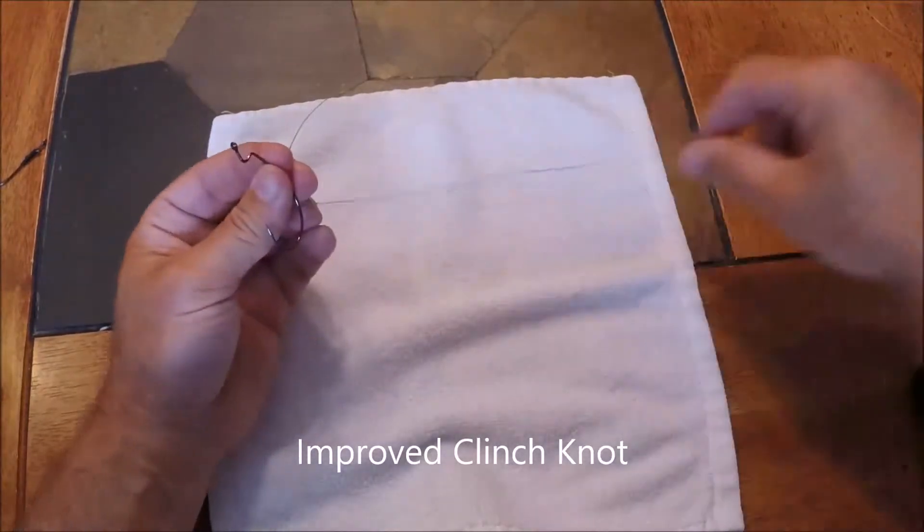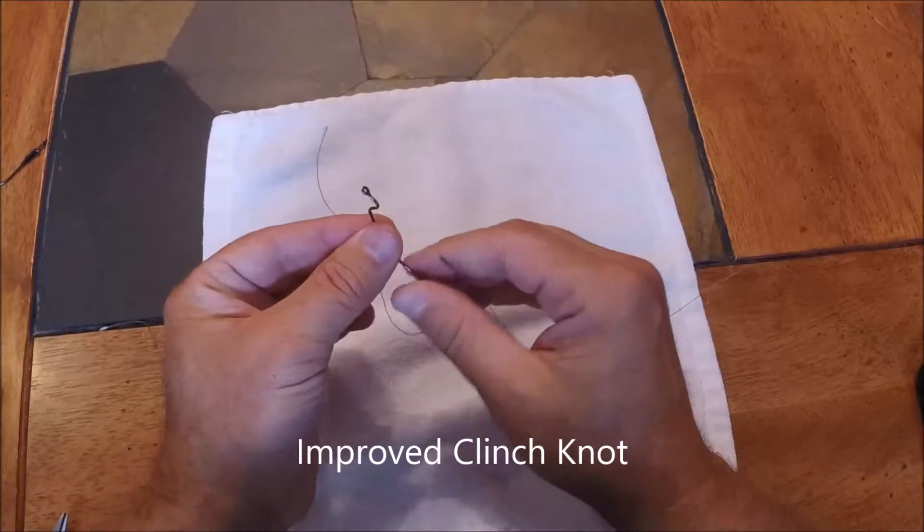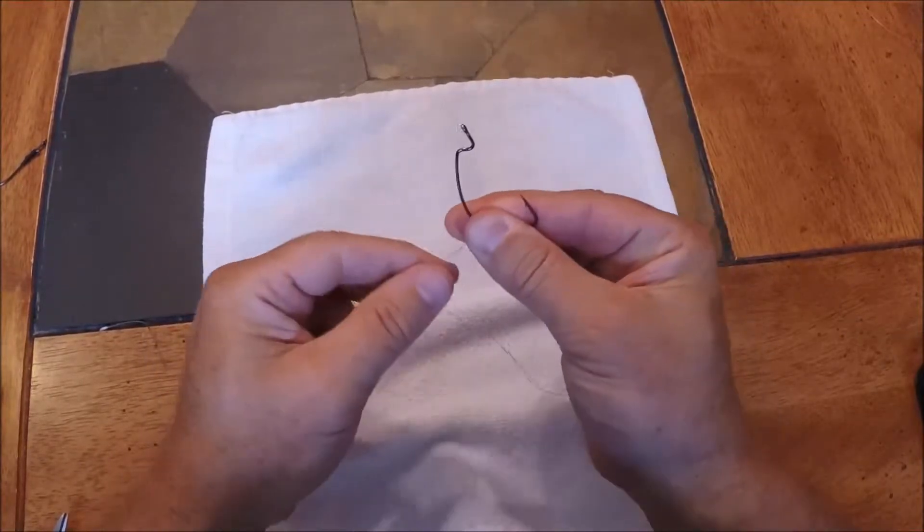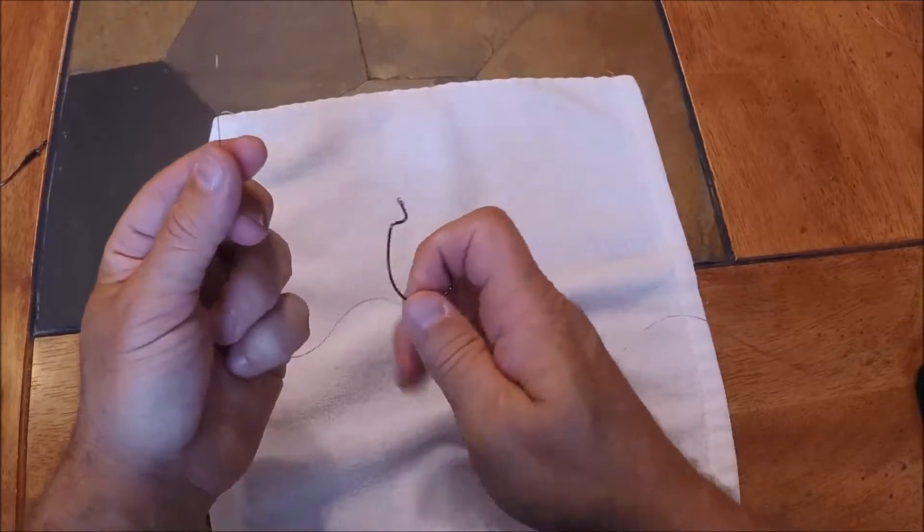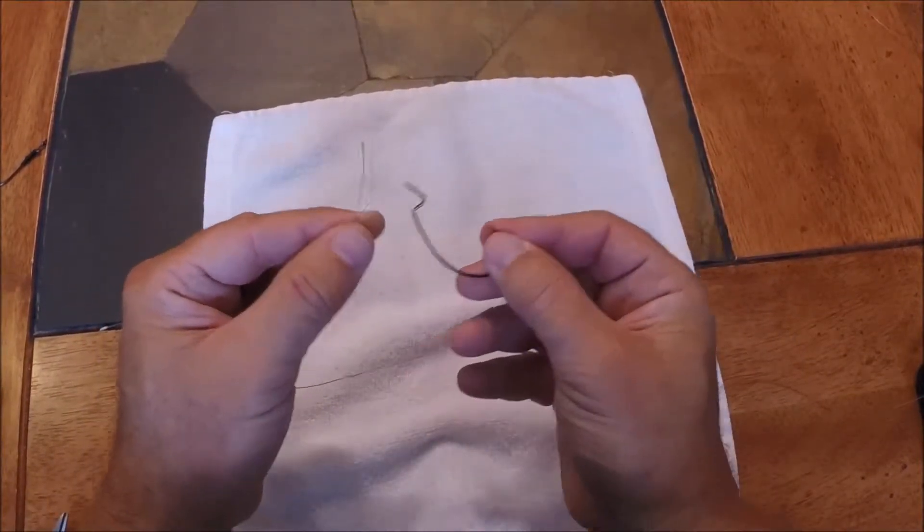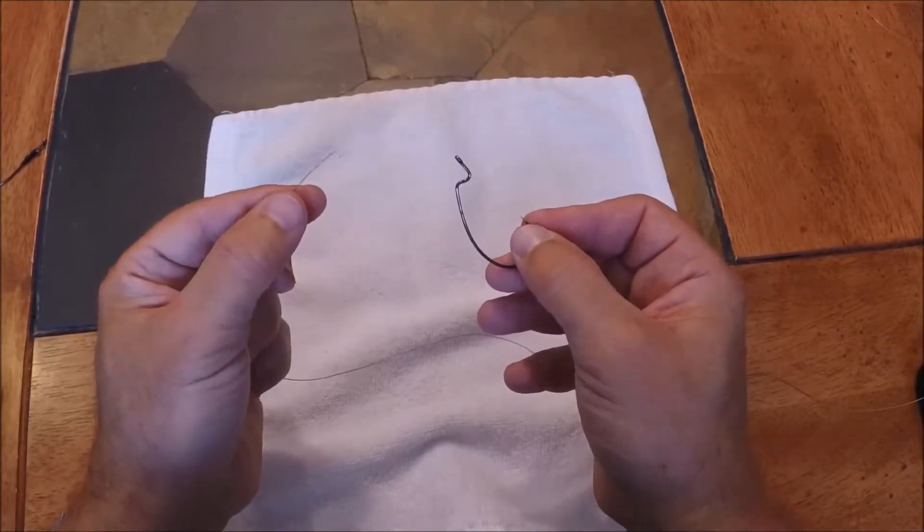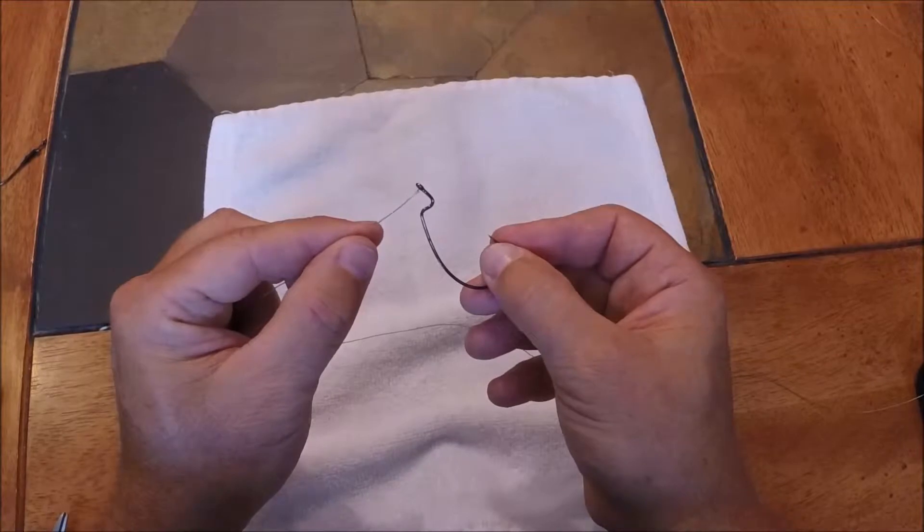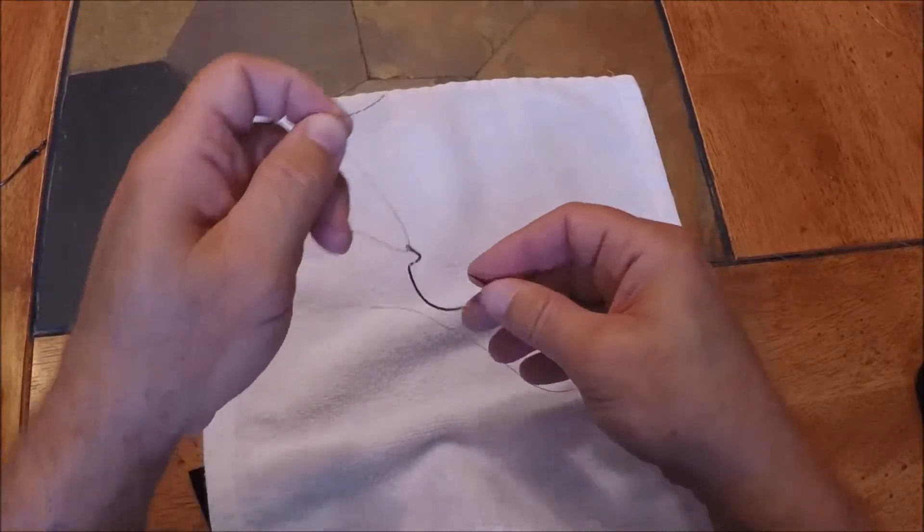Another knot that is typically used by a lot of fishermen is called the improved clinch knot. Its advantage is you're not going to have the long tag end like you would in a Palomar. Palomar knot is probably a little better, but as long as you cinch this down nice and tight you shouldn't have any line or knot breakages. Okay, I'm going to feed this through the eyelet of the hook. It doesn't matter which way I go, only one time.